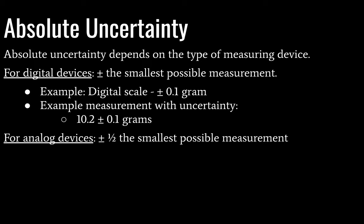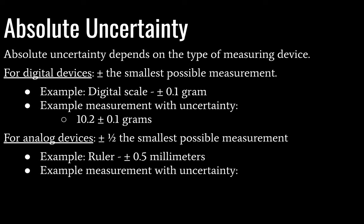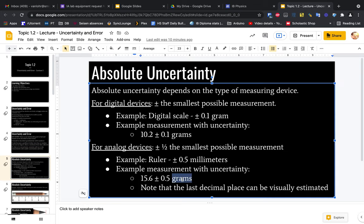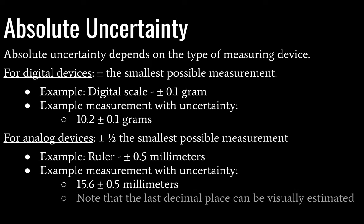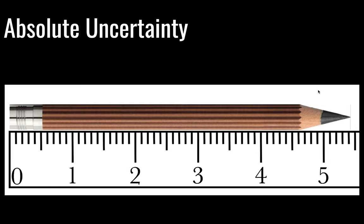For an analog device, our measurement will be plus or minus one-half the smallest possible measurement. Going back to my ruler, the example is going to be plus or minus 0.5 millimeters — we take half of the smallest increment, which is one millimeter. So an example measurement here would be 15.6 ± 0.5 millimeters. You should note that your last decimal place for an analog device can be visually estimated, and we don't have that ability with digital instruments, which gives us a slightly better estimate.